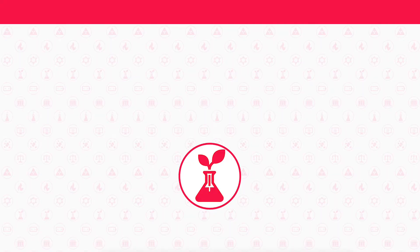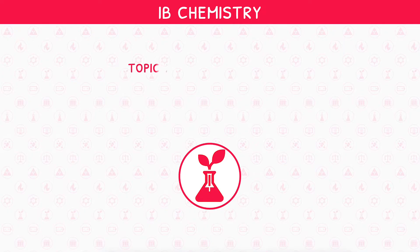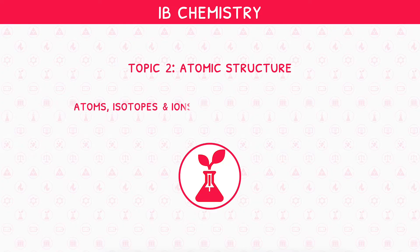Welcome back to our IB Chemistry video series. This is the first video in IB Chemistry Topic 2, Atomic Structure, where we will be looking at atoms, isotopes and ions, and the mass spectrometer.